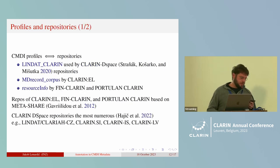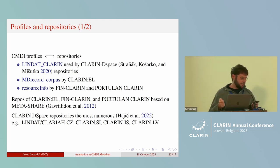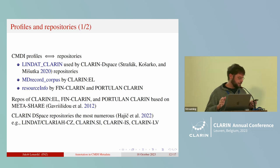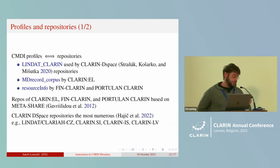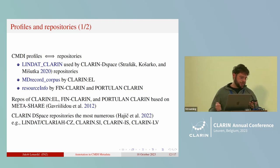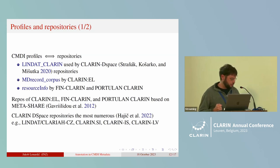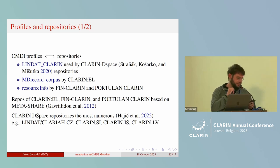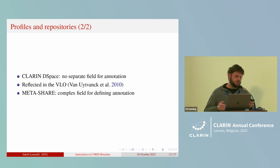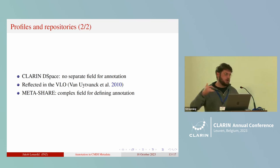The link between CMDI profiles and CLARIN repositories is important. Certain CMDI profiles are characteristic of specific repositories. The Lindat-CLARIN profile is used solely by repositories employing the CLARIN DSpace architecture, which is the most common in CLARIN — underlying repositories of the Slovenian, Czech, Icelandic, and many Nordic and Baltic consortia. By contrast, the MD record corpus profile is used by the Greek CLARIN repository, while the resource info profile is used by the Finnish and Portuguese repositories, which are based on the Metashare system. The main difference is that DSpace resource entries do not provide a separate field to which annotation CMDI components can be mapped, unlike metadata such as size, license, authorship, and resource type.